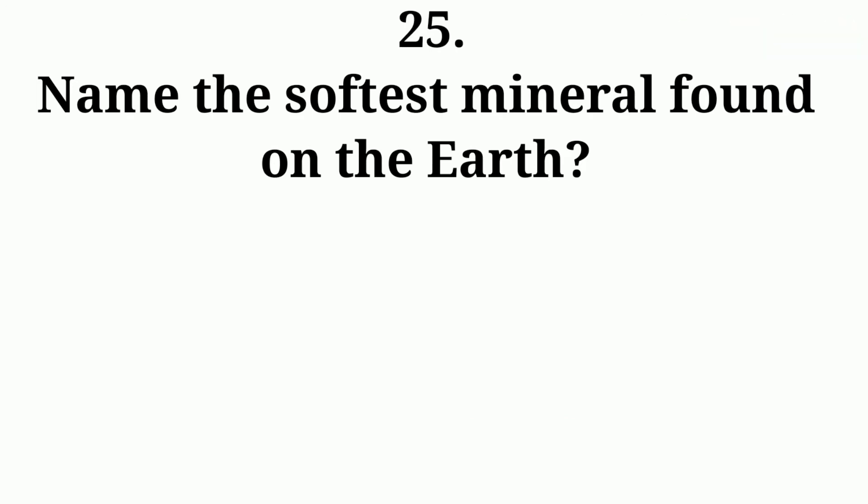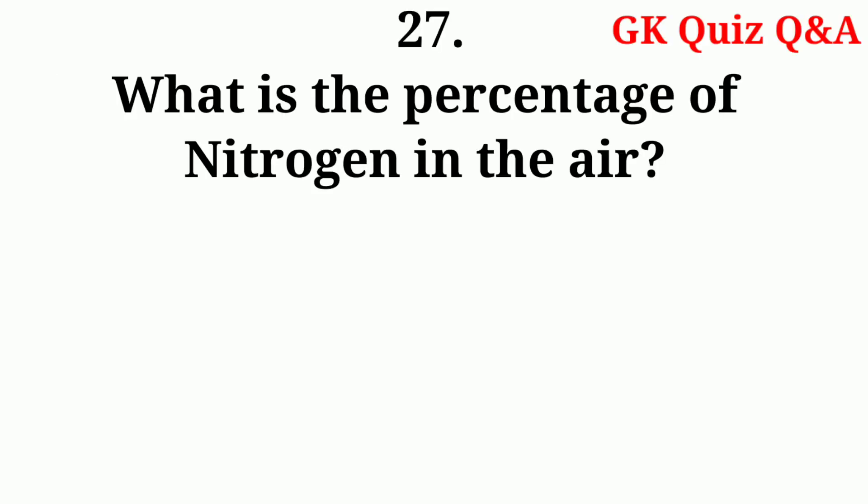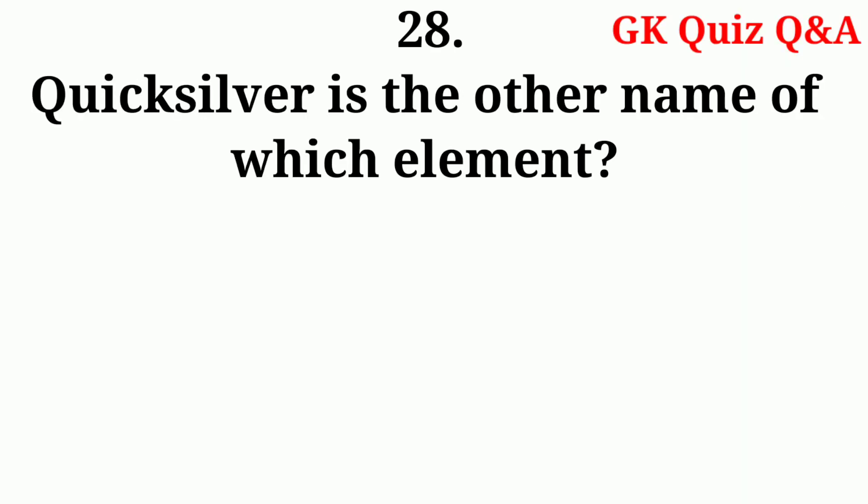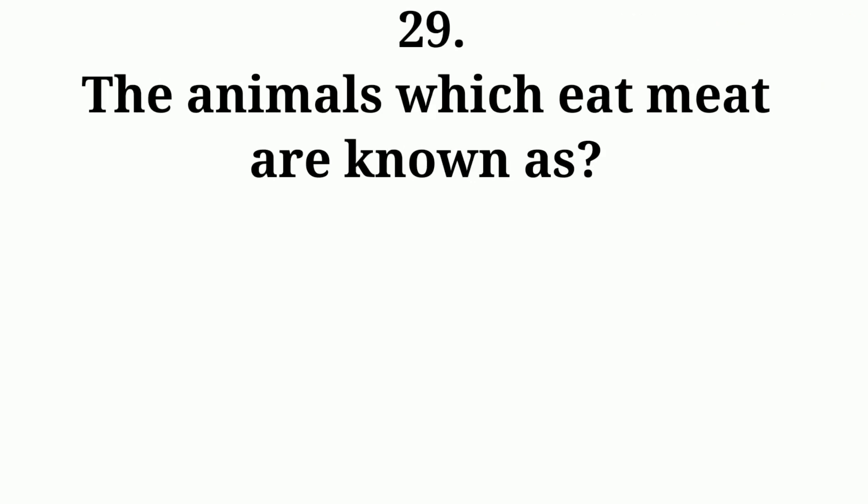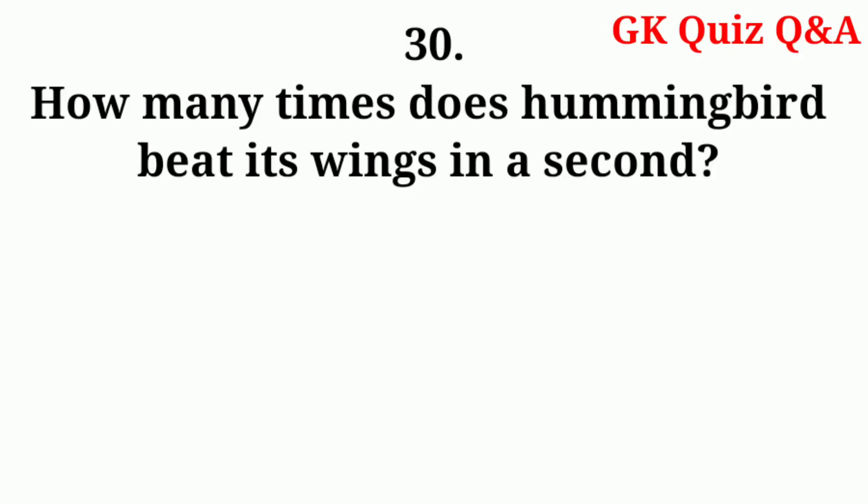Answer: At night. At the time of birth a human skeleton consists of how many bones? Answer: 300 bones. Name the softest minerals found on the earth? Answer: Talc. Name the seventh planet from the Sun? Answer: Uranus. What is the percentage of nitrogen in the air? Answer: 78.09 percent. Quicksilver is the other name of which element? Answer: Mercury.